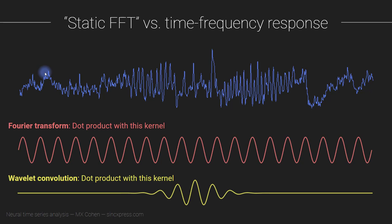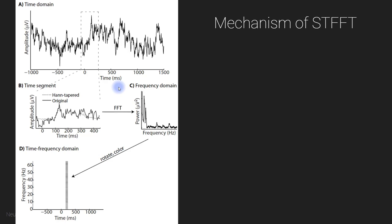That gives you the spectral characteristics of this window of time, and then you would move that and do this window of time and this window of time and so on. And that really is simply how the short-time Fourier transform works.